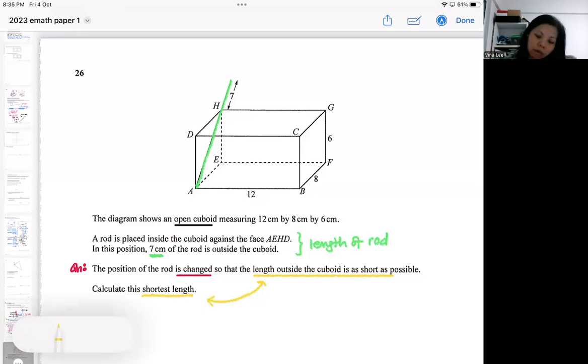So what you can do is, of course, I think you will need to find your length of the rod first. Finding the length of the rod is not difficult, it's just Pythagorean theorem. I can apply Pythagorean theorem here and find the length of the rod. Just apply the Pythagorean theorem and then add the 7 that's protruding out and I will get the length of the rod.